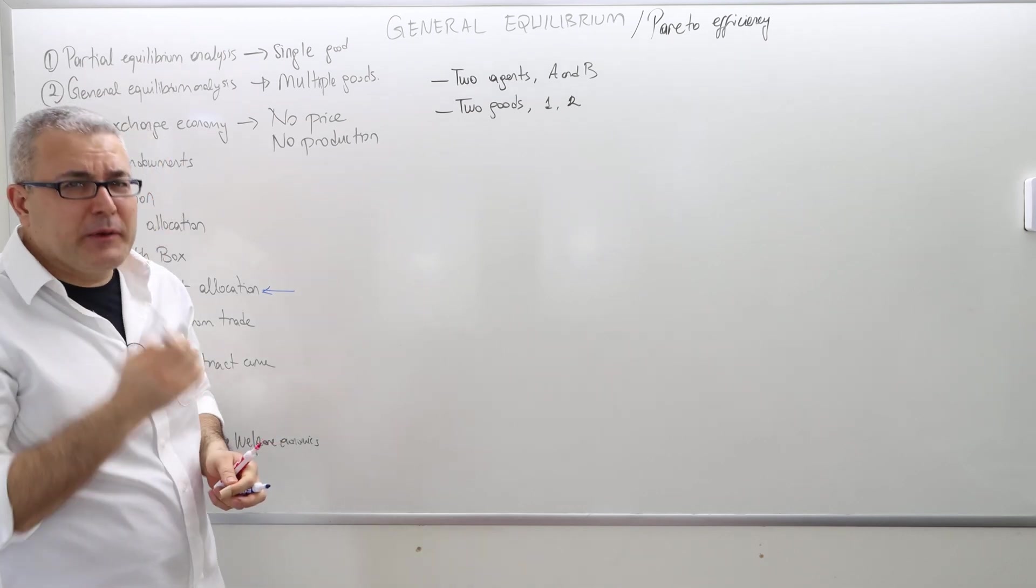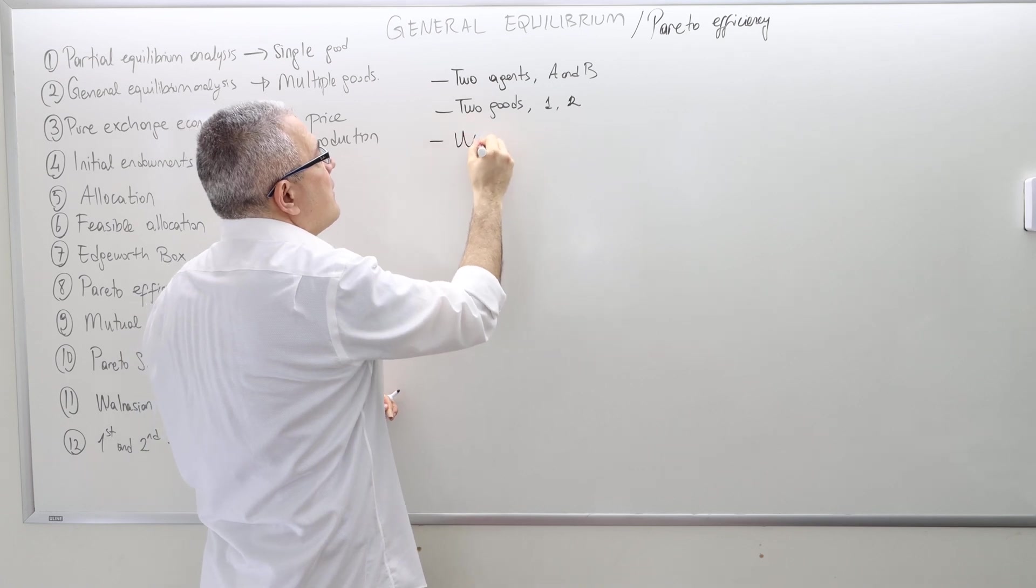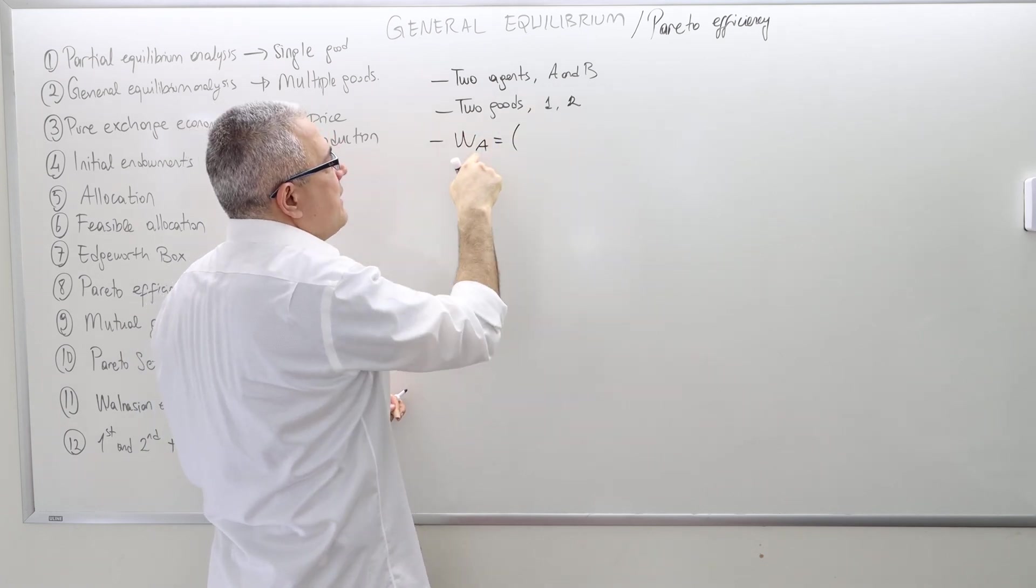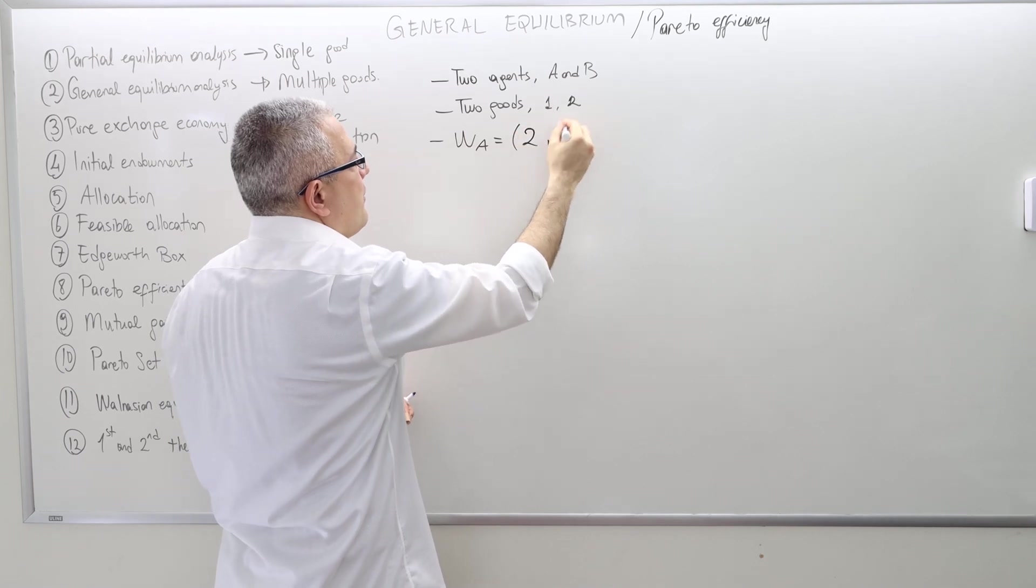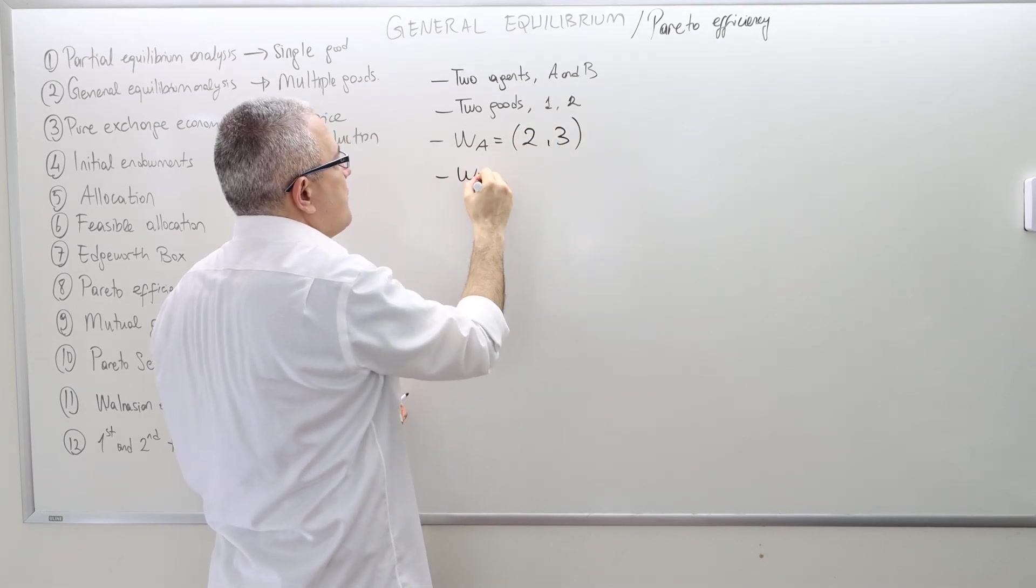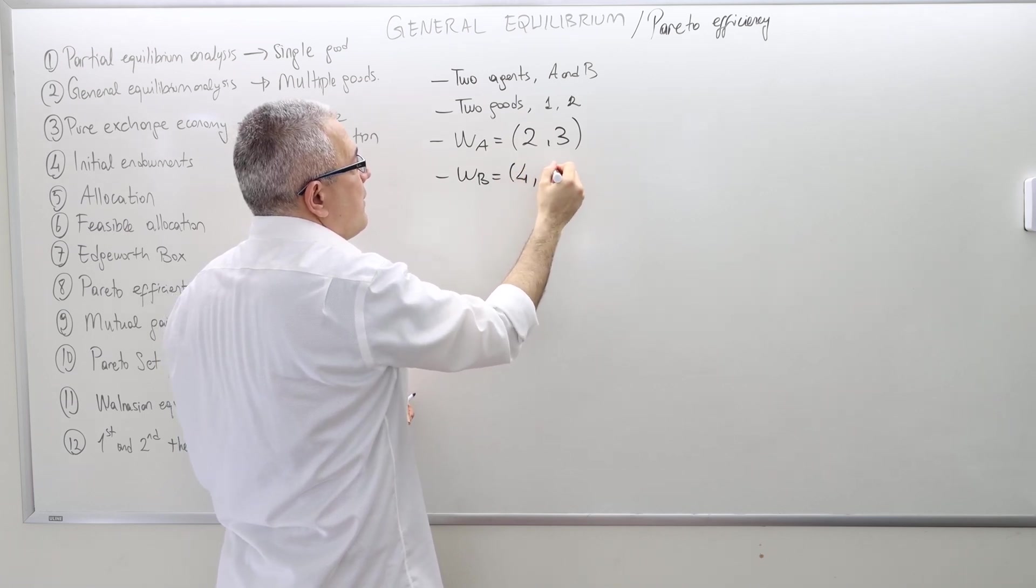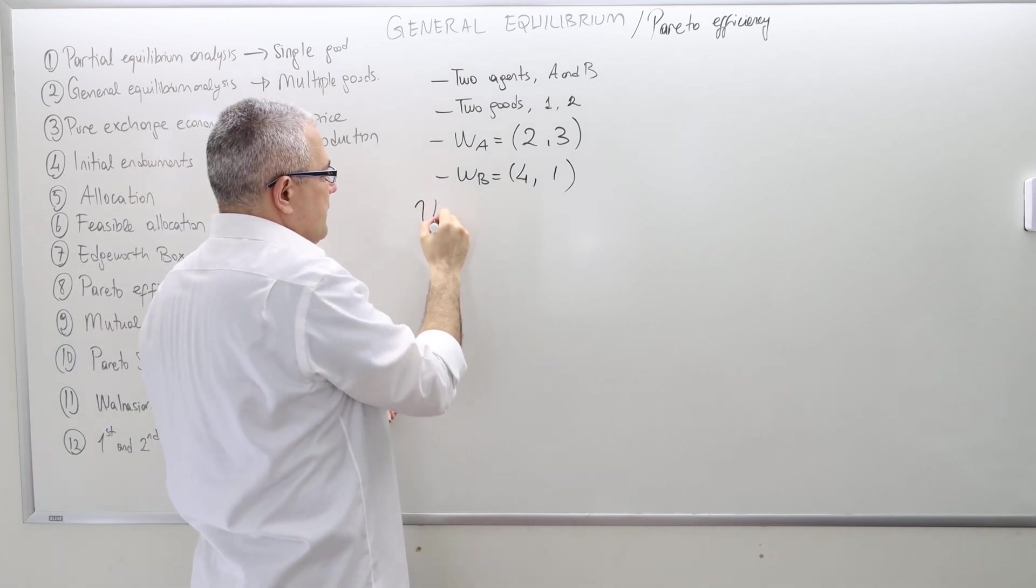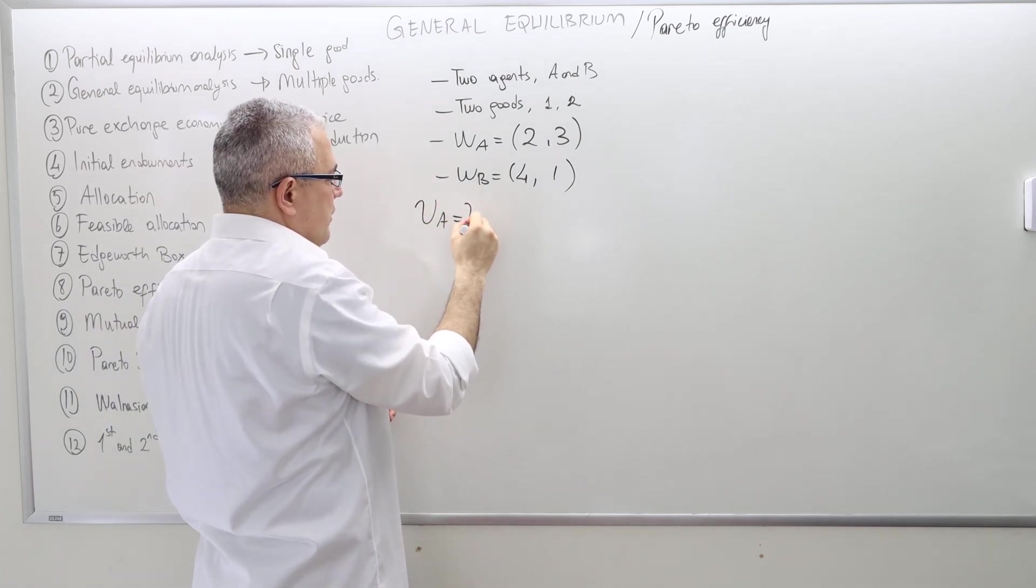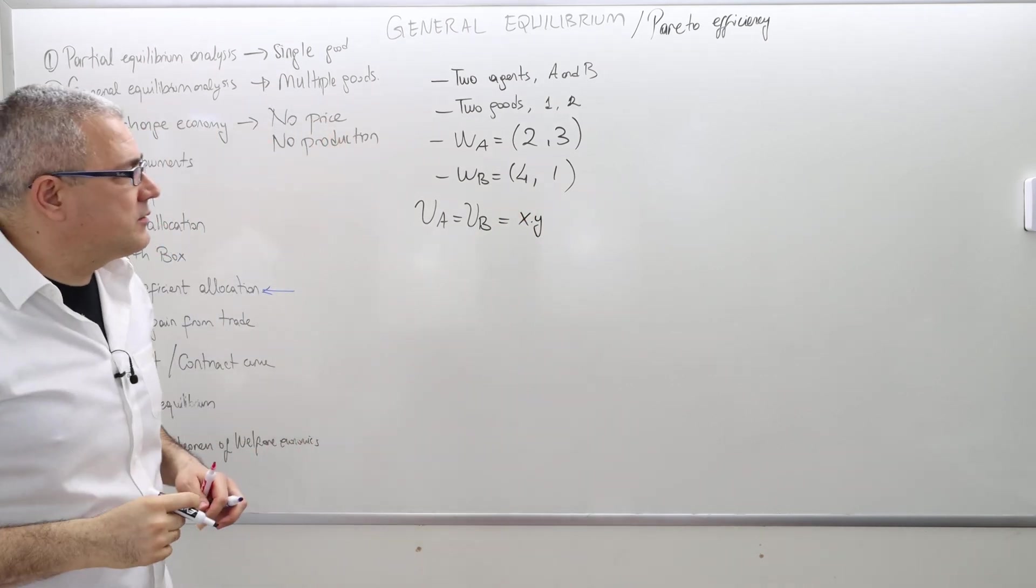In this video, I'm going to solve some numerical examples. Let's start with the following. Suppose the initial endowment for agent A is two apples, three bananas. For agent B, it's four apples and one banana. And the utility functions uA equals uB, which equals x times y.